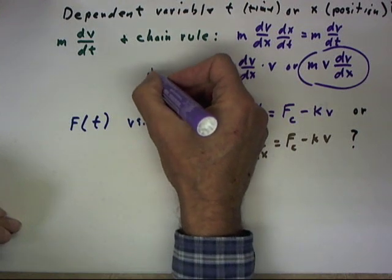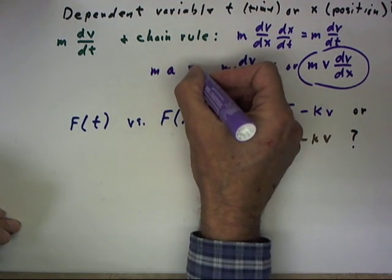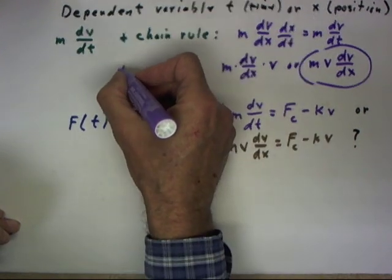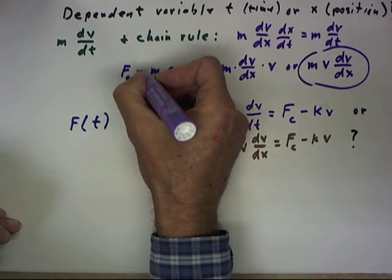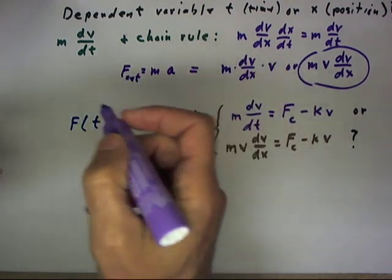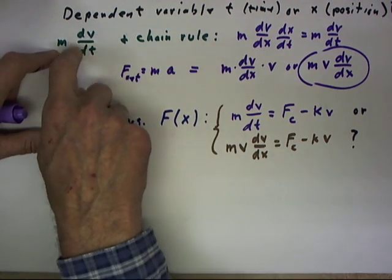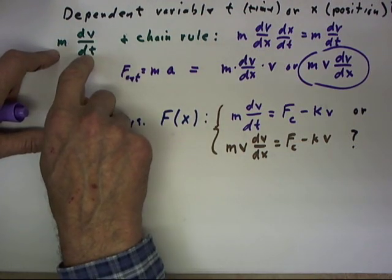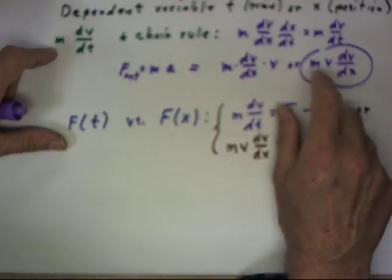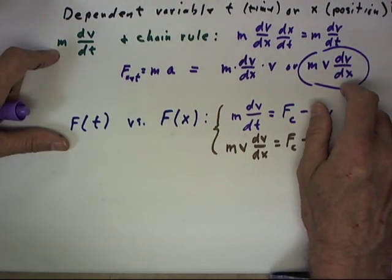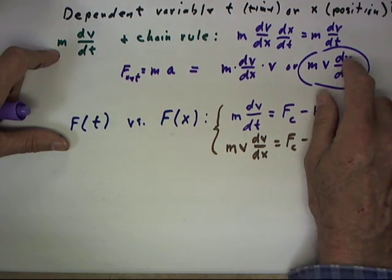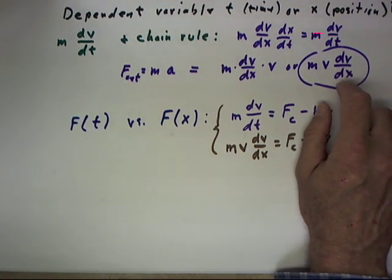And once more, this is nothing but mass times acceleration equals net force. So our net force can be expressed as m dv/dt, mass times the derivative of velocity with respect to clock time, or as m v dv/dx, where v is understood now to be a function of x.